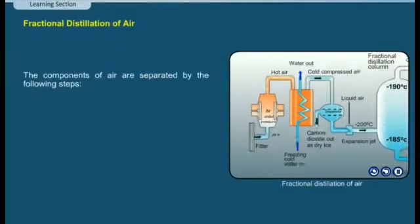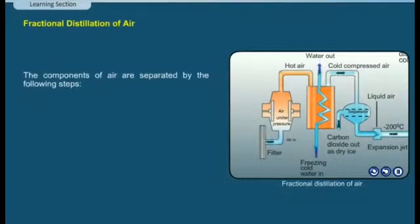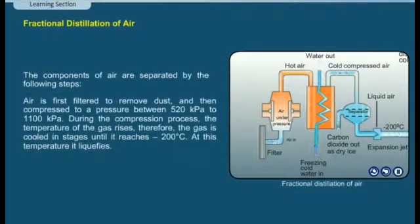The components of air are separated by the following steps. Air is first filtered to remove dust and then compressed to a pressure between 520 kPa to 1100 kPa.